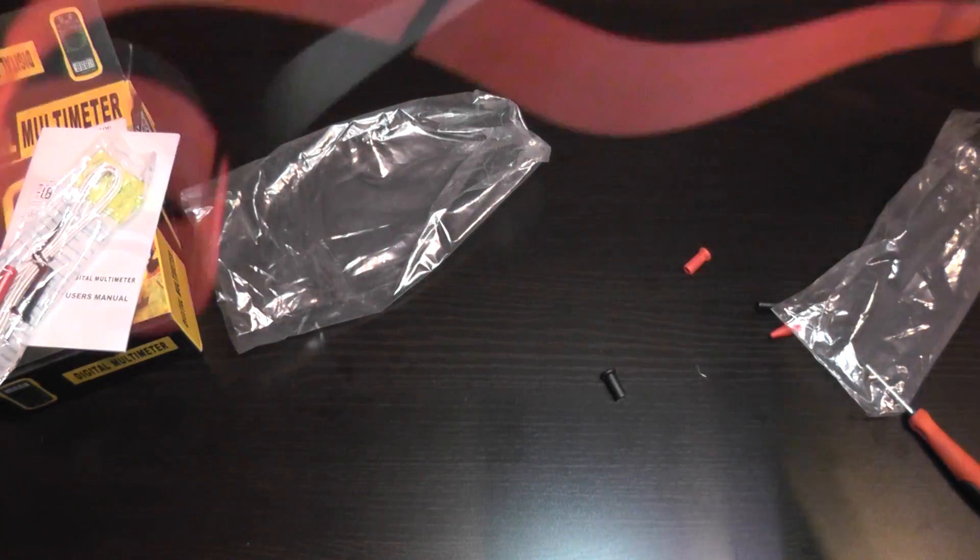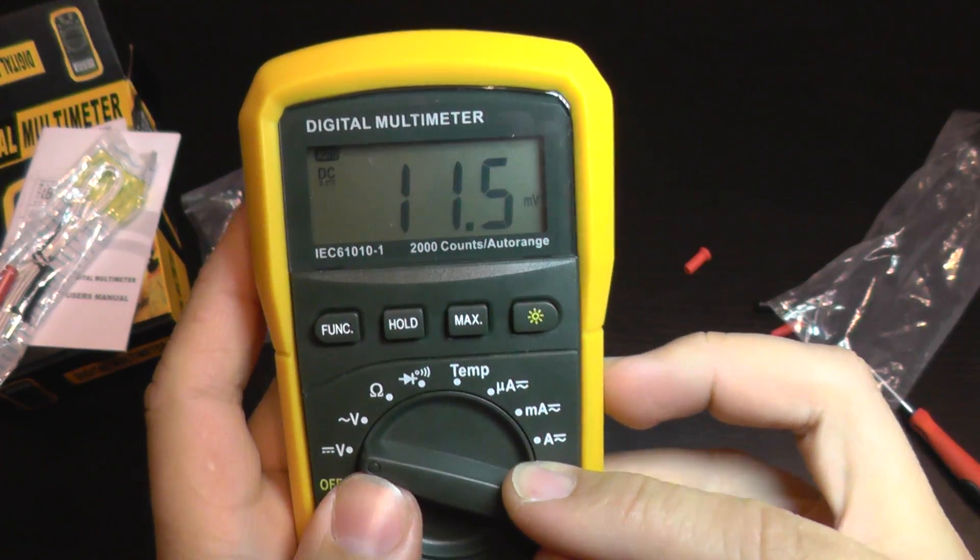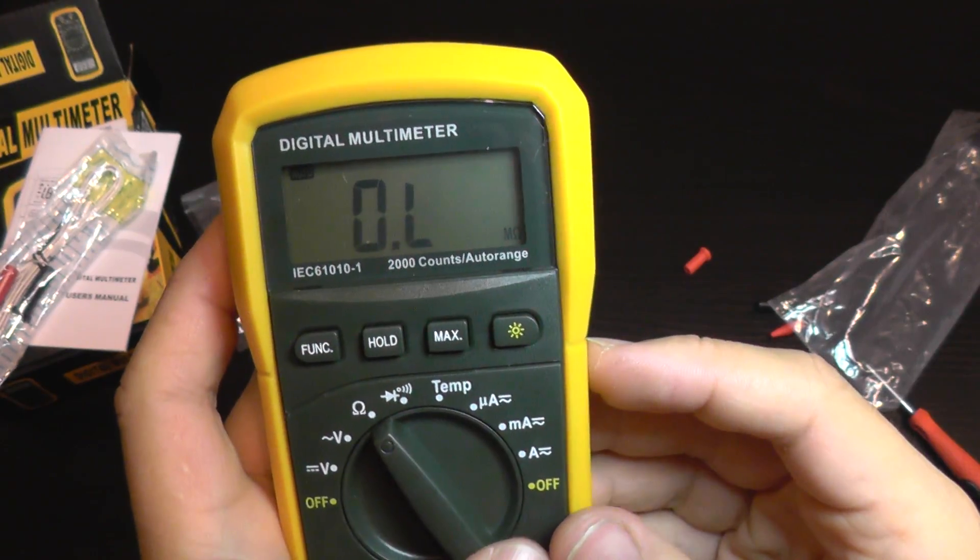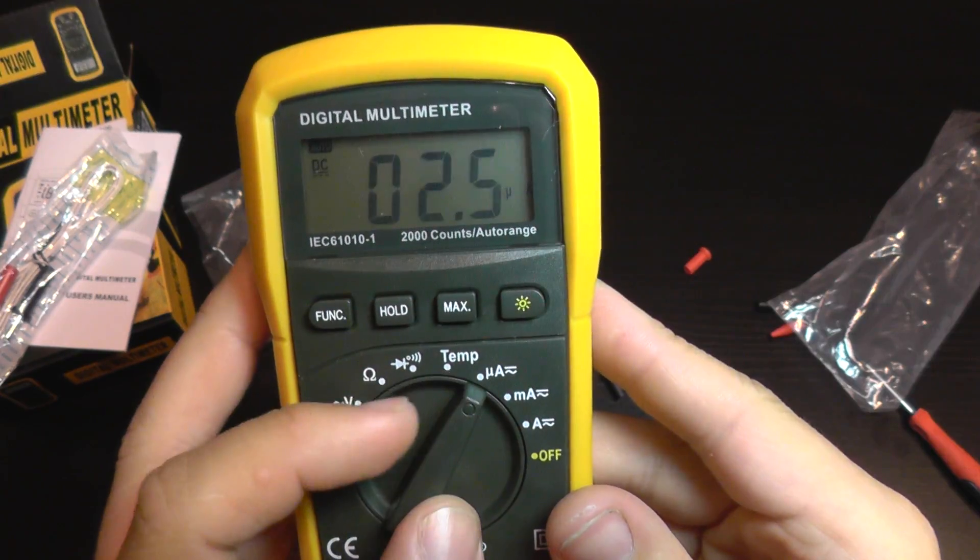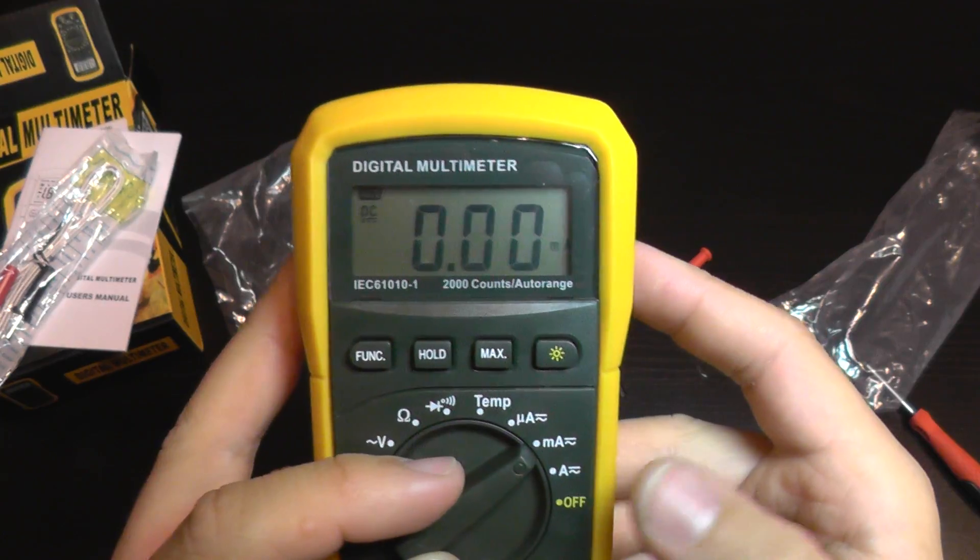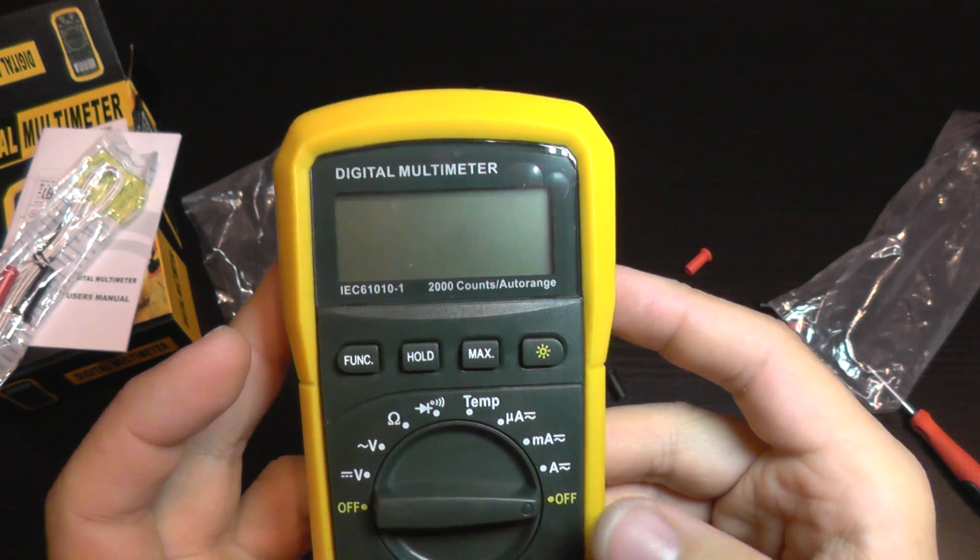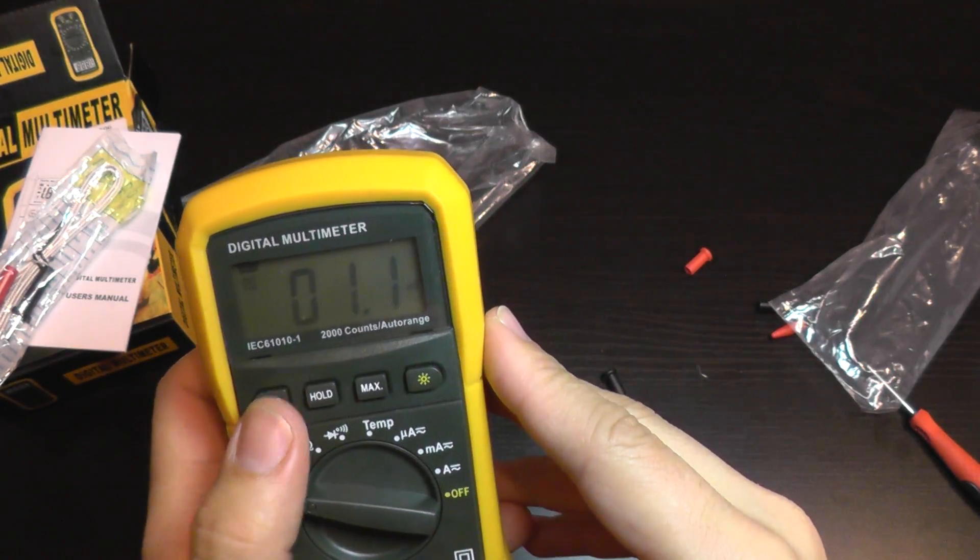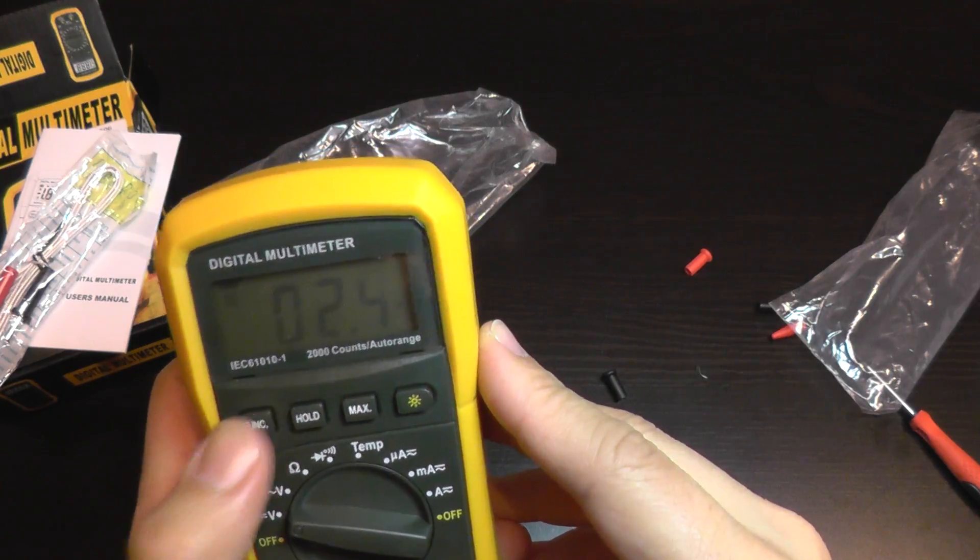Moving on to its functions, we get voltage for DC current, voltage for AC current, resistance measurement, beeper or diode test, temperature, and of course current in microamperes, milliamperes, and amperes. It goes for DC and AC together, and you can also turn it off.